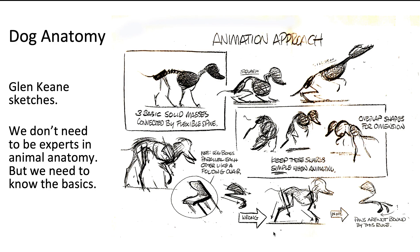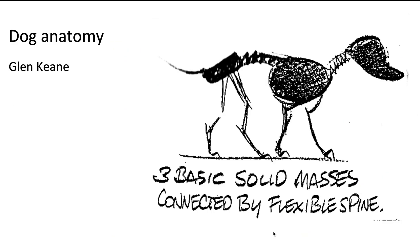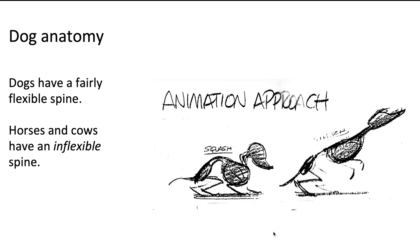If you are a herbivore — in particular if you eat grass — you're going to have a very big stomach and a very heavy, inflexible spine to hold that stomach, so you can get enough nutrition out of something that is not inherently nutritious. Glenn talks about three basic solid masses: the chest, the hips, and the head. That's the way of thinking about animation, getting lots of nice squash and stretch into your work.